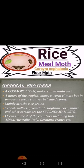The second major character: it is a native of the tropics, enjoys a warm climate, but in temperate areas, survives in heated stores. Third character: it mainly attacks rice grains — rice grain is its primary host. While wheat, millets, groundnuts, sorghum, corn, maize, and other cereals are the secondary hosts.